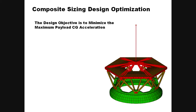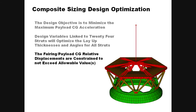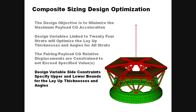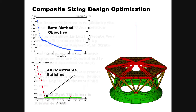The design objective is to minimize the payload CG acceleration. The ply design variables will modify all 24 struts to be identical. As the optimization proceeds, the rattle space displacement is constantly monitored. Upper and lower bounds are defined for the ply design variables, and an additional constraint is placed on the minimum total thickness of all plies for the struts. The design objective is to minimize the maximum acceleration response at whatever frequency it occurs.